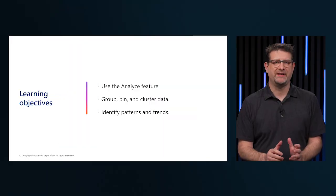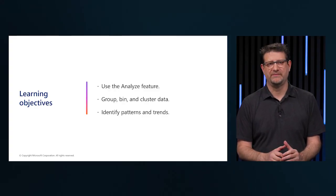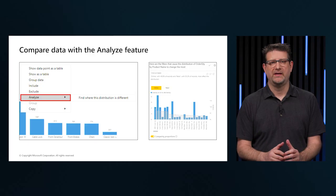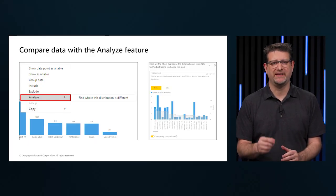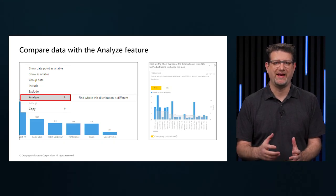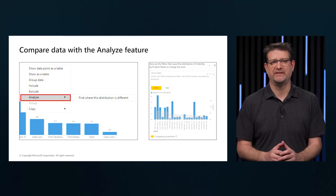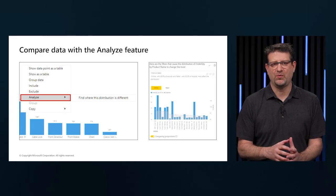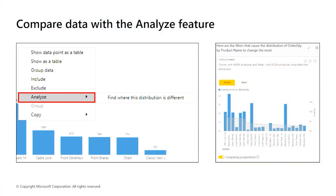In this session, we will use the Analyze feature to group, bin, and cluster data and identify patterns and trends. The Analyze feature provides analysis that is generated by Power BI for a selected data point. We use this feature to see if Power BI has found something new, or to give a different insight to the data. This feature is useful for analyzing why a data distribution looks the way it does. Instead of exploring the data manually, we use the Analyze feature to get a fast, automated, insightful analysis on the data.